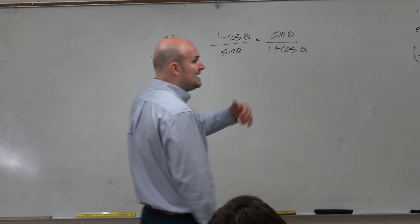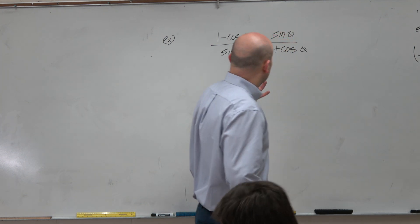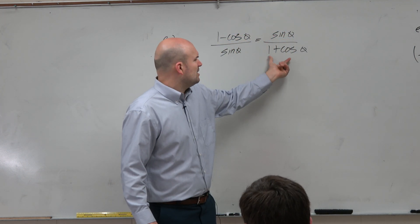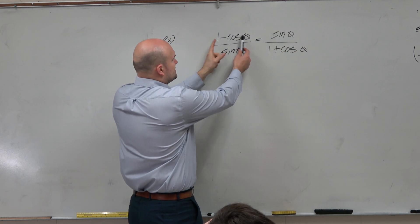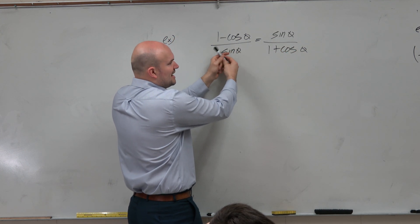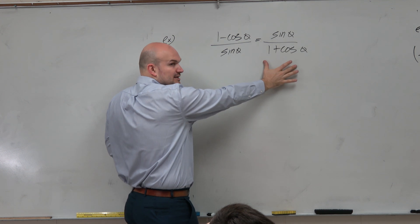So we can't multiply, we can't subtract. Obviously, we could try to combine the 1 plus the cosine, but you guys got to think, I don't want to really combine these together because I need this denominator to be separated.